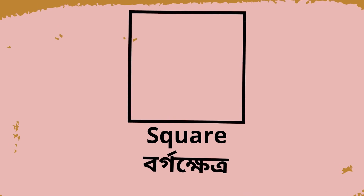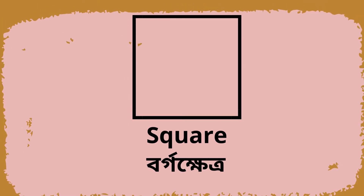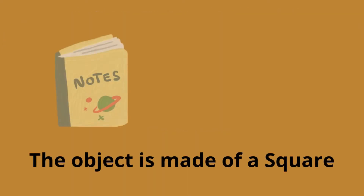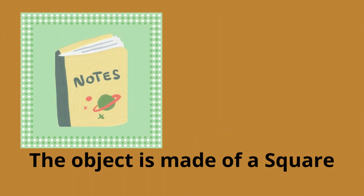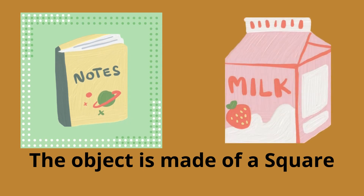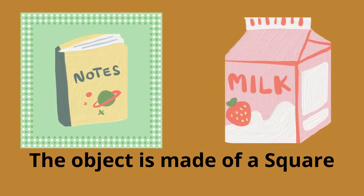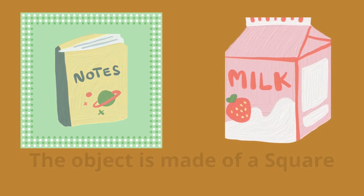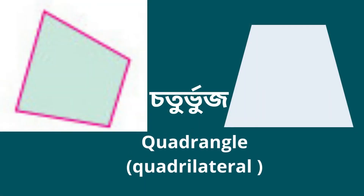Square. Items made of square shapes such as notebooks, milk pack, quadrangle.